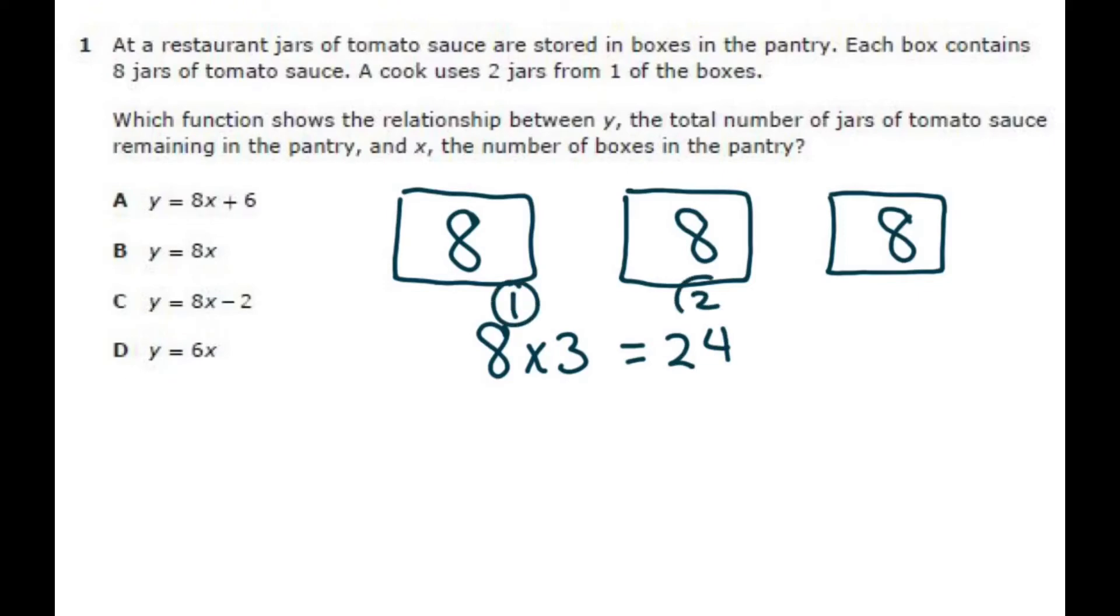So if that was it, we'd pick choice B. But a cook uses two jars, so whatever we're going to do, we're going to subtract 2 because you're taking two away.